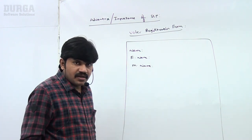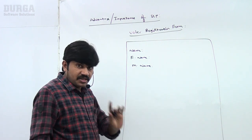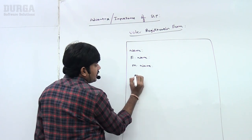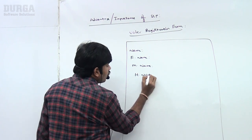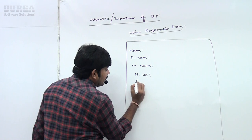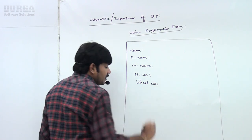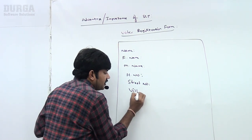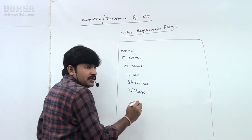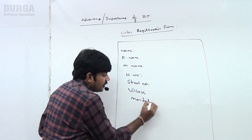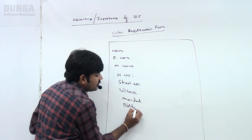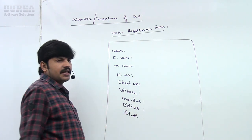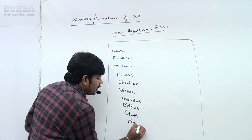Then Address — house number, street number, then whether it is a village or city, the Mandal, the District, the State, and also the Pin code. All of these are typical fields in a registration form.